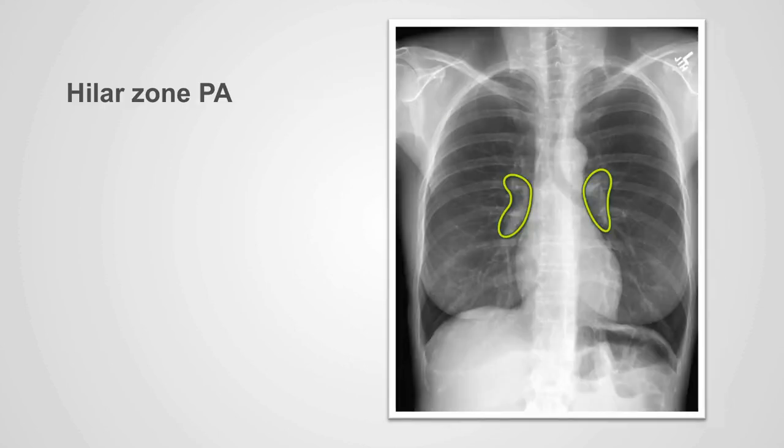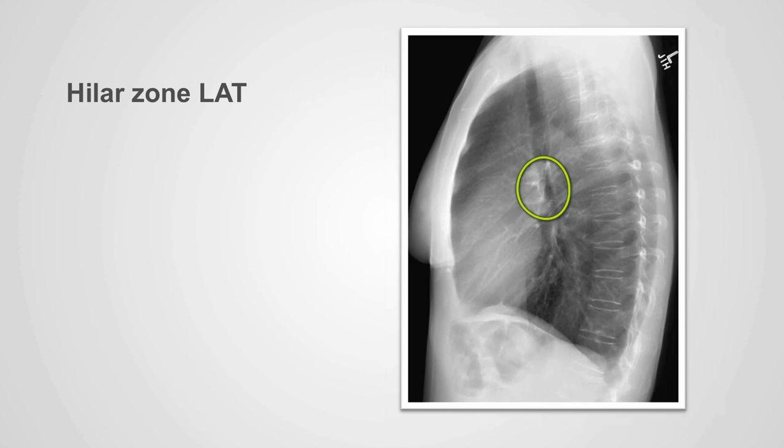The hilar zones are two medial areas of the thorax that correspond to the location of the proximal pulmonary arteries. On the PA x-ray, they appear as distinct white extensions from the central part of the mediastinal zone, and the shape of the hilar zone roughly resembles the letter H. On the lateral x-ray, the hilar zone lies centrally within the thorax and contributes to the whiteness seen adjacent to the lower trachea and the carina.